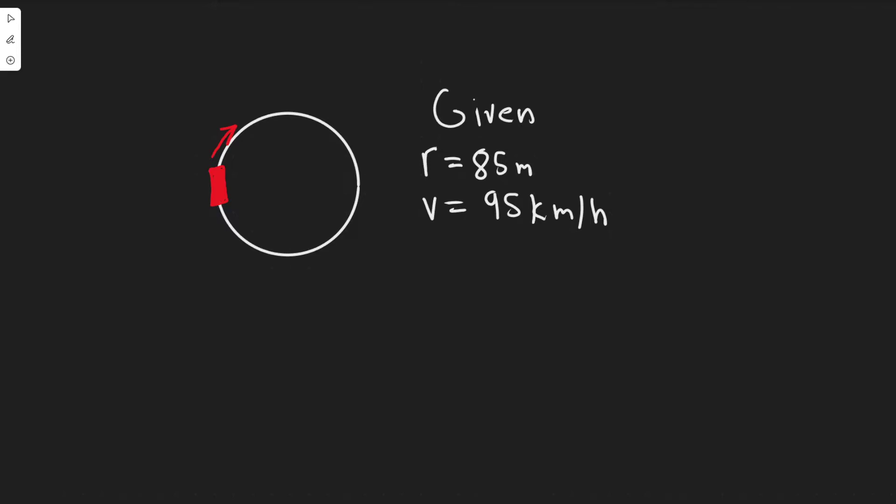Basically what we're trying to find here is the coefficient of static friction, so we're finding μₛ. We have this car and we know it's going to be rounding this curve here, and they're giving us some information such as the radius and the velocity.